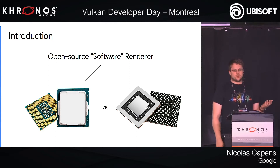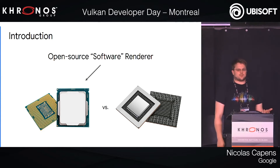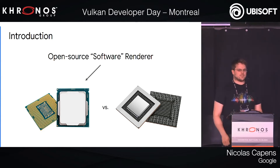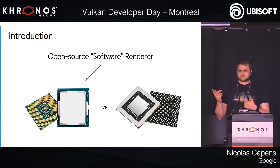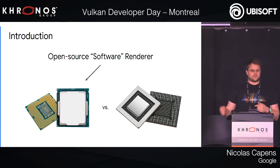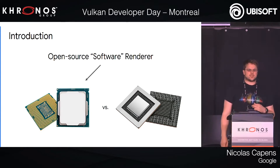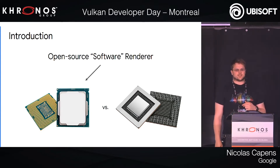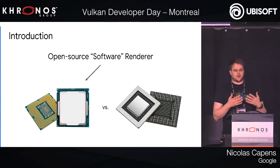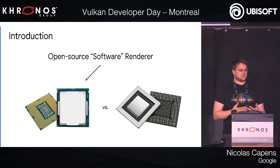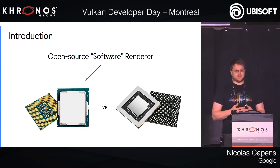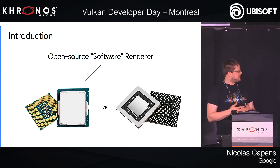The GPU also runs software, so there's not that much difference anymore between the two. If you follow the subgroups discussion, that's just exposing all of the vector operations that are on the GPU. On the CPU, they've been available all along.